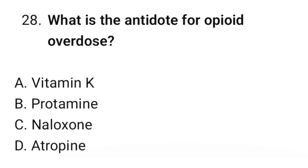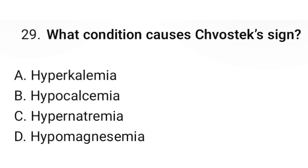Question number 28: What is the antidote for opioid overdose? The correct option is C: Naloxone. Question number 29: What condition causes Chvostek's sign? The correct option is B: Hypocalcemia.